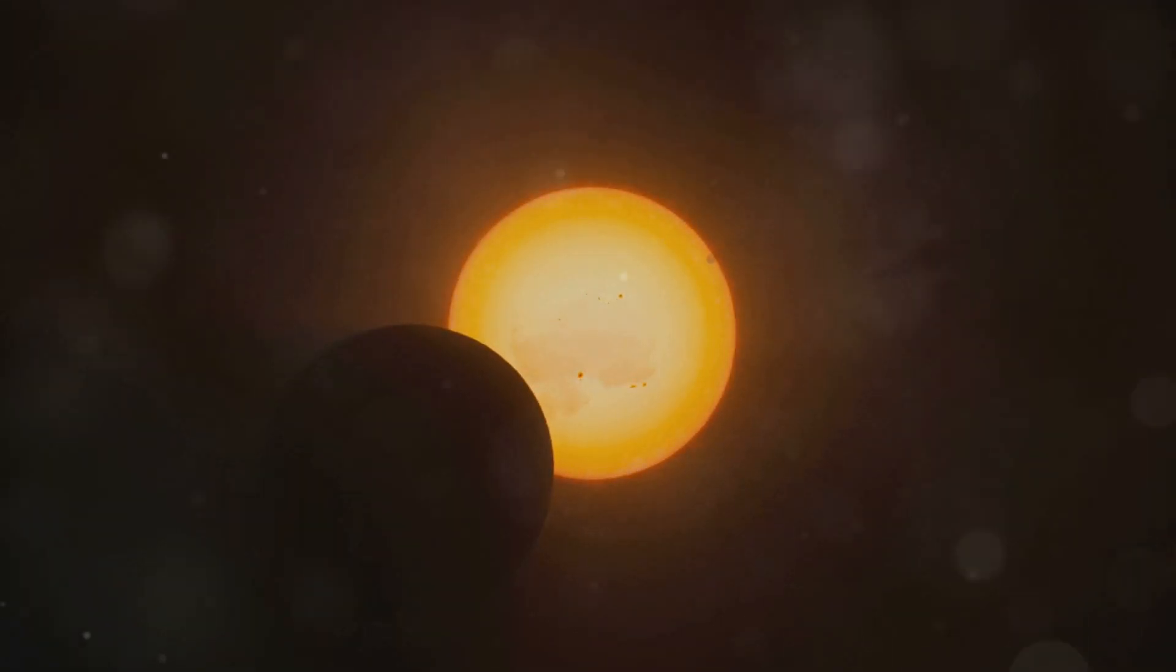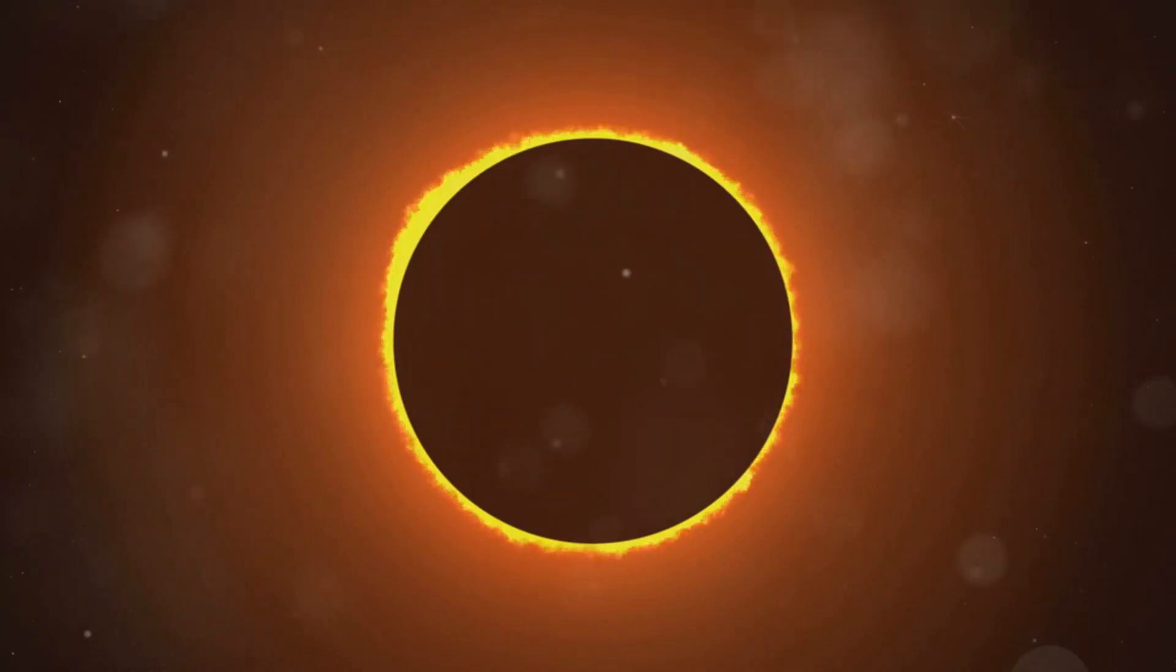These events are rare and can be seen only from specific parts of the world. The moon blocks the Sun's light for a little while, and it gets a bit darker on Earth. This temporary darkness can be quite eerie yet mesmerizing. It's like the Sun is playing hide-and-seek with us.